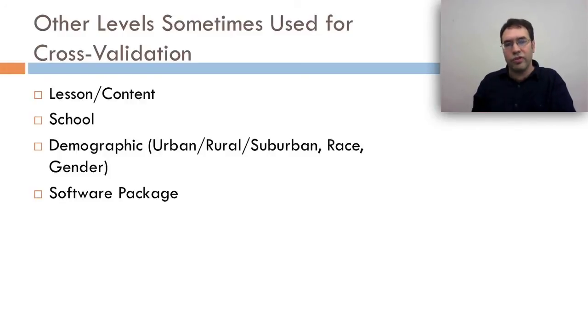Other levels are sometimes used for cross-validation. You'll see lesson-level cross-validation, does your model work on new content? School-level cross-validation, does your model work on kids from new schools? Demographic level, this one you don't see very often, but my group is starting to play with it. And we've actually seen that when you cross-validate the urban, suburban, and rural levels, models tend to work a lot better going across urban and suburban than they do when they're going from those to rural. That's a big important difference to pay attention to if you want your models to work on every kid. And finally, a variant of lesson or content is software package. Can your model even work on completely new learning systems? In some cases, it can.